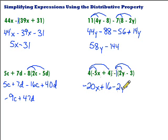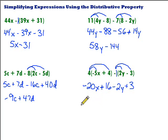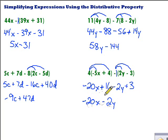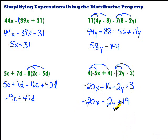Then minus 1 times negative 3: a negative times a negative gives us a positive, so plus 3. Now we combine like terms. We've got an x and a y — we can't combine those because they're different variables, so they come right down: negative 20x and minus 2y. Then we have plus 16 and plus 3: 16 plus 3 is 19, so plus 19. That's all we can simplify — different variables or no variable — so that's in simplest form.